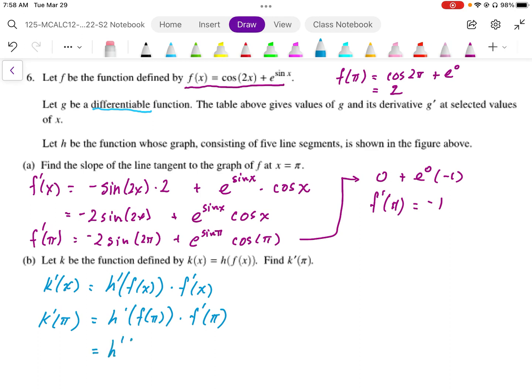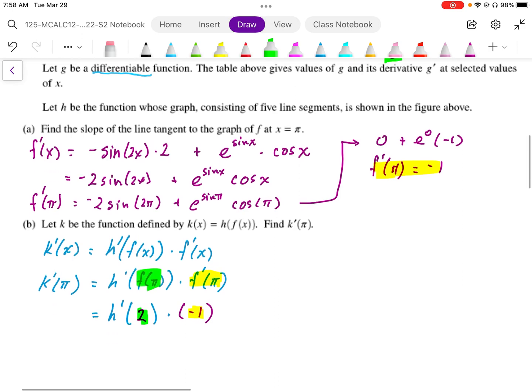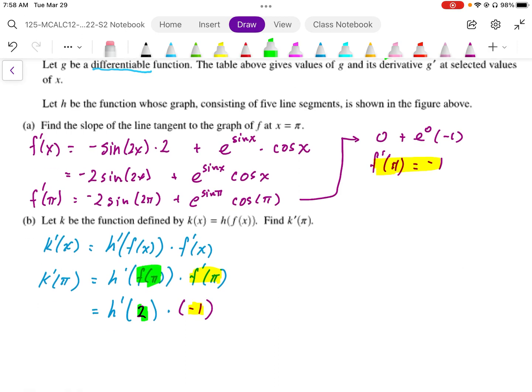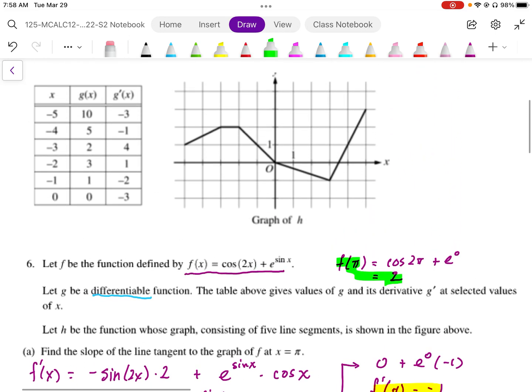So I get h prime. Well, f of pi we've evaluated as 2, times f prime of pi we've worked out as negative 1. From above. And I'm just going to highlight this here. That comes from here. And the 2 value comes from up there. So what I need to then, to finish this off, I just need to determine the slope of h at x equals 2.